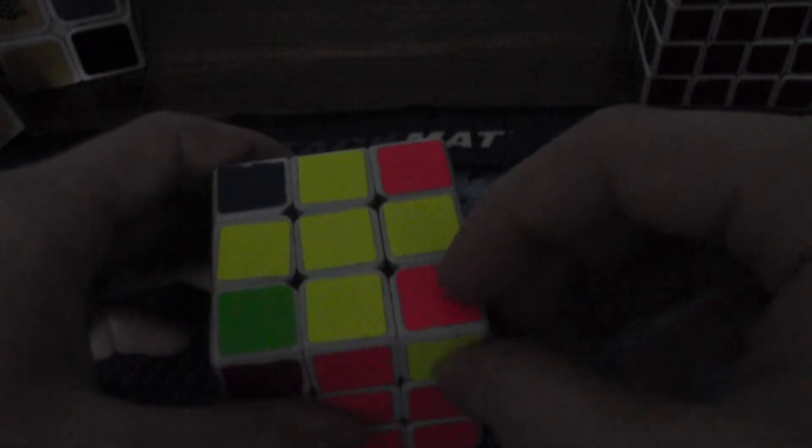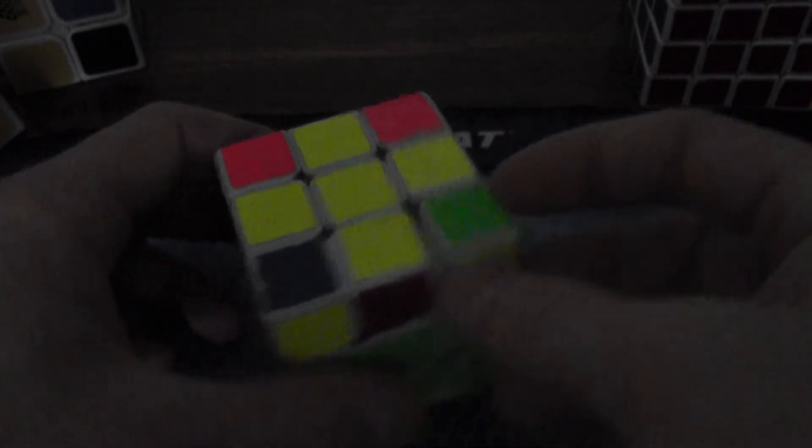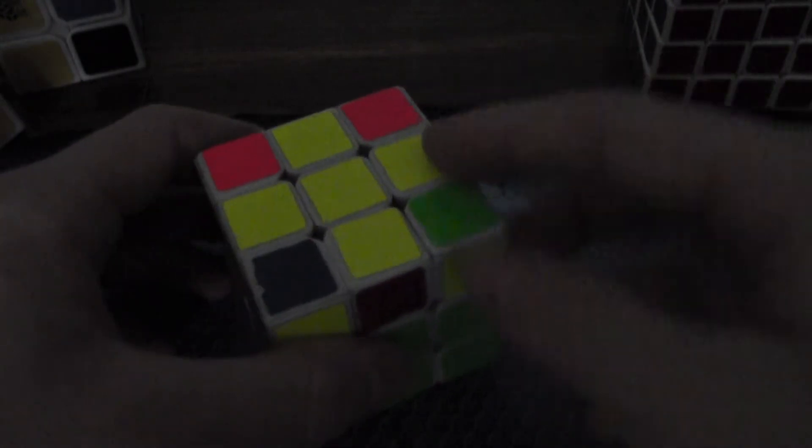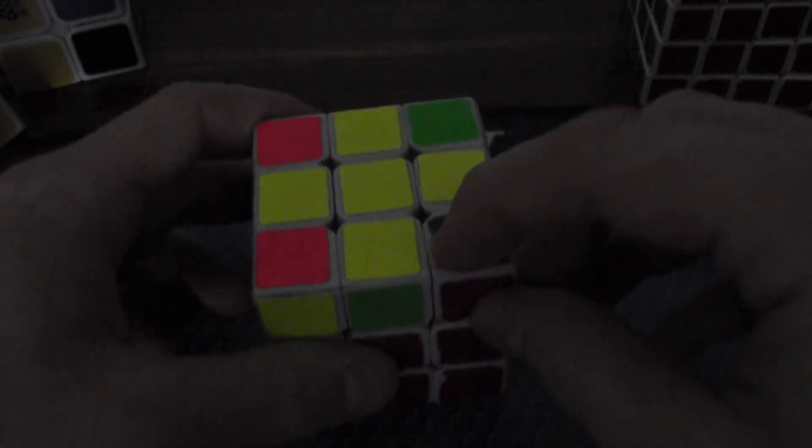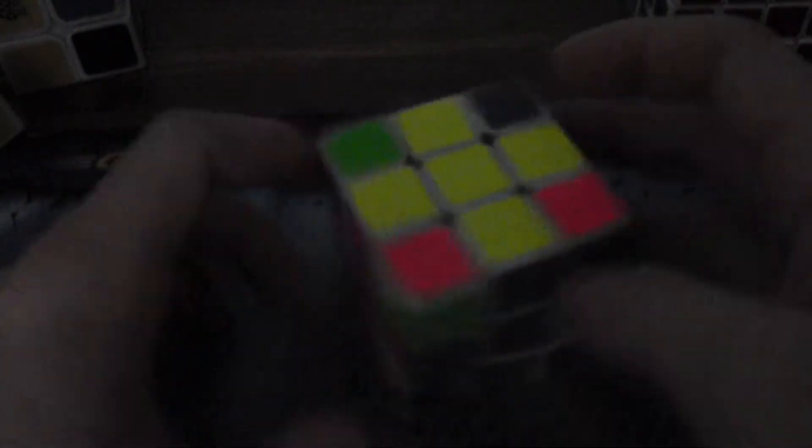But in this case, this one needs to be twisted clockwise, this one needs to be twisted clockwise, so that's two that need to be twisted clockwise. But this one needs to be twisted counterclockwise, this one also needs to be twisted counterclockwise. Those two counterclockwise twists cancel out these two clockwise twists, so this is solvable.